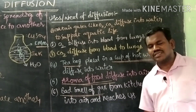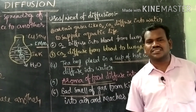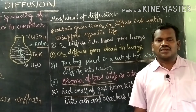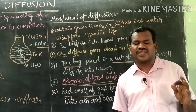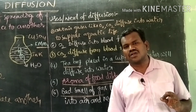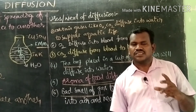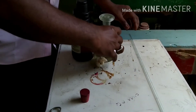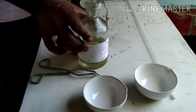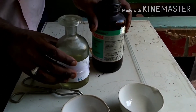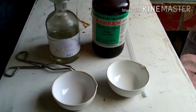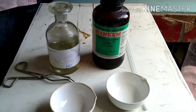Now let us understand the process of diffusion in gases with another activity. From this activity, what we are going to learn is that the rate of diffusion of a gas depends on its molecular weight. For this activity, we have hydrochloric acid HCl and ammonia solution — ammonium hydroxide NH4OH.